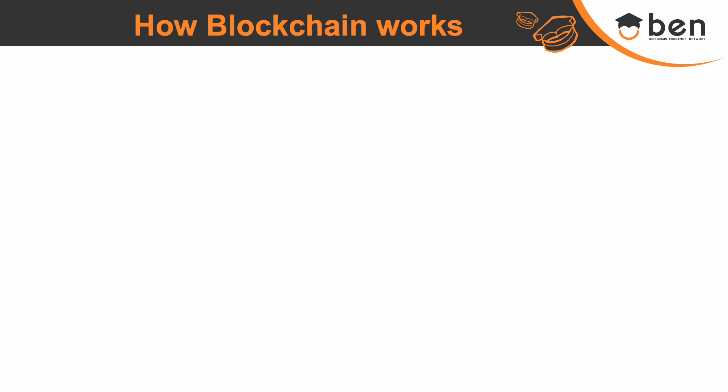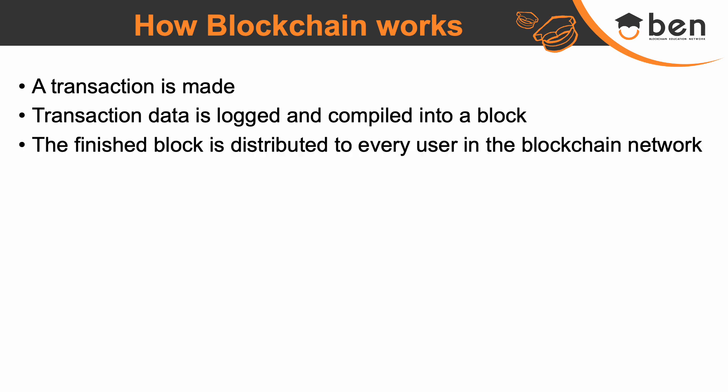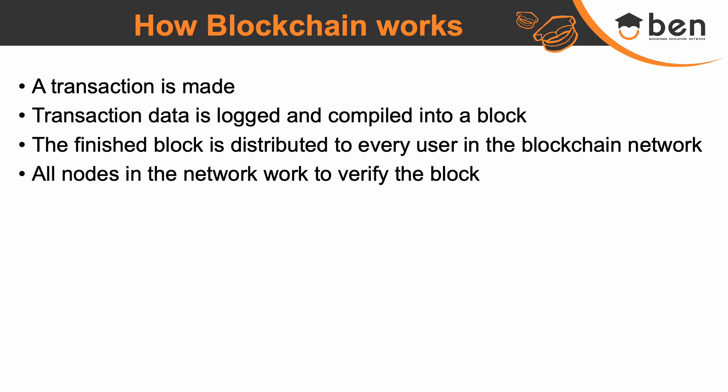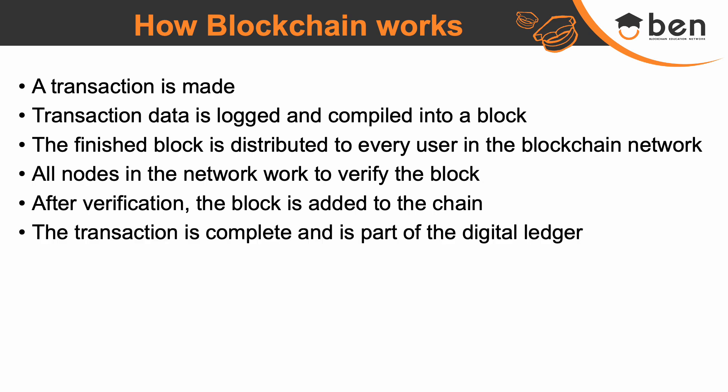Now that we have discussed the important concepts, let's quickly see what exactly the blockchain process is. First, a request for a transaction is made — whether you are deploying a smart contract or storing data on chain, everything is in the form of a transaction. Then this transaction data is logged and compiled into a block. After the block is finished, it is distributed to every node in the blockchain network. All the nodes then start working to verify the block. After verification, the block is added to the chain, and the transaction is marked complete as part of the digital ledger. This is why in blockchain there is a time gap between the initiation of a transaction and its completion.